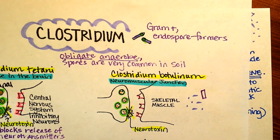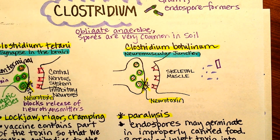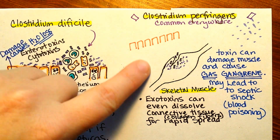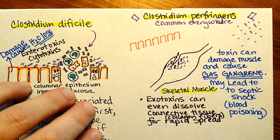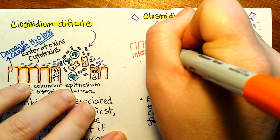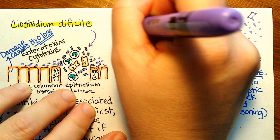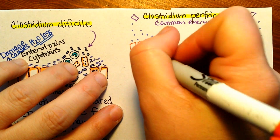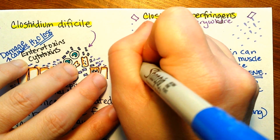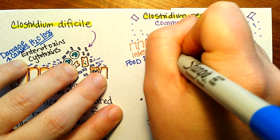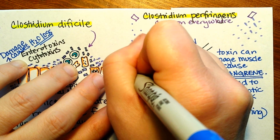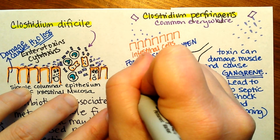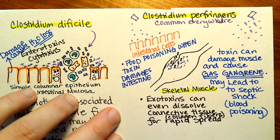If you'd like to know more about that one, there is a video on Clostridium botulinum and how it has effects at the synapse. But now we're talking about a different type of Clostridium that can also cause food poisoning. Here would be the intestinal cells, and what happens is that the toxin can damage the intestinal cells and cause really bad food poisoning — mostly in the small intestine is where the worst effects are seen.